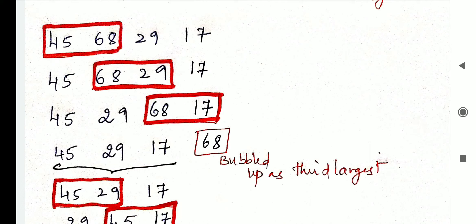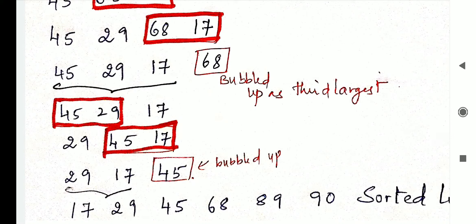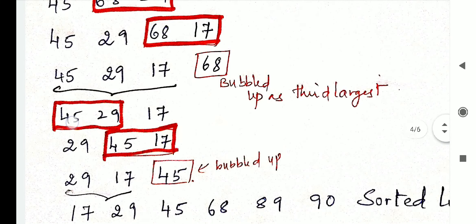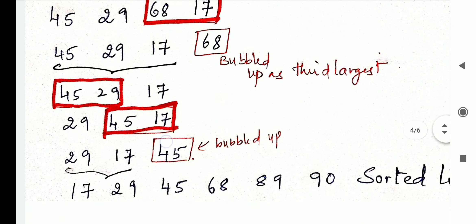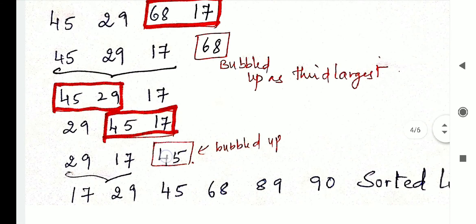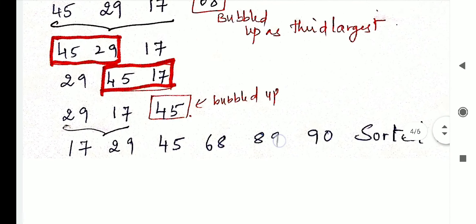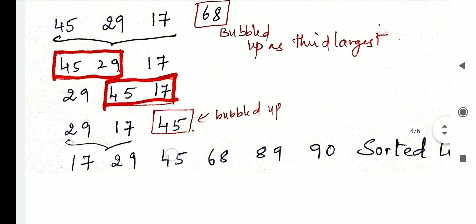Then 68 with 29: since 68 is greater, swap them. Again 68 with 17: since 68 is greater, swap them. Now we get 68 as the third highest element, bubbled up during our third scan. The left out unsorted elements are now 45, 29, and 17. For the next scan, we compare 45 with 29: since 45 is greater, swap. So 29 comes to 45's place and 45 comes to 29's place. Again 45 is compared with 17, giving us the fourth highest element — 45 — bubbled up.